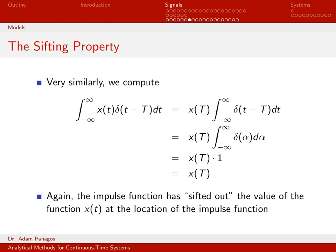So when I'm all done doing this integration, what do I get? I get out a value of my underlying signal. Again, my impulse function has sifted out a single value of the continuous time signal. In this case, since the impulse function was located at time t equals capital T, it sifted out the value of my signal at time capital T.